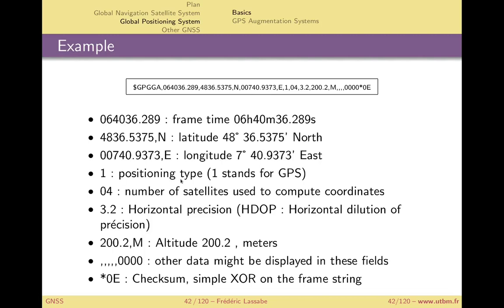One is the positioning type. One stands for GPS. Four is the number of satellites used to compute the coordinates.